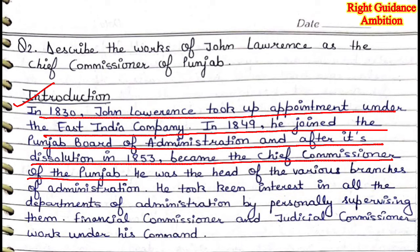In 1830, John Lawrence took up an appointment under the East India Company. As you know, the British came to trade in India through the East India Company. In 1849, he joined the Punjab Board of Administration. After its dissolution in 1853, he became the Chief Commissioner of Punjab. The Board of Administration worked for 4 years before being discontinued.